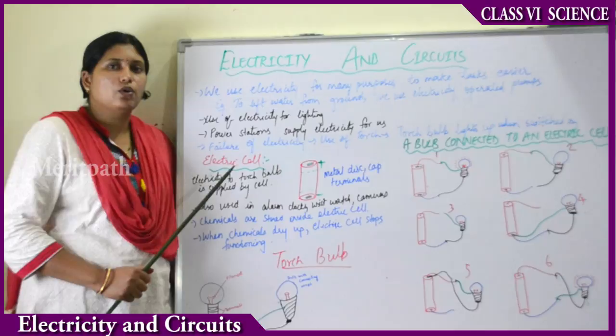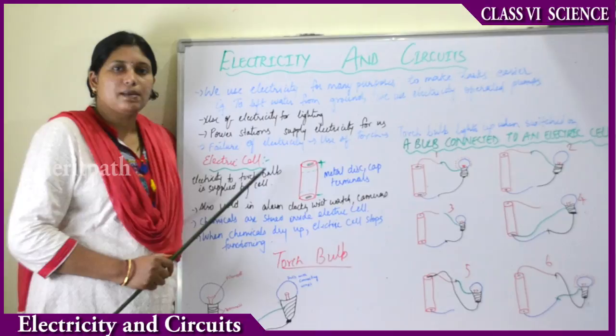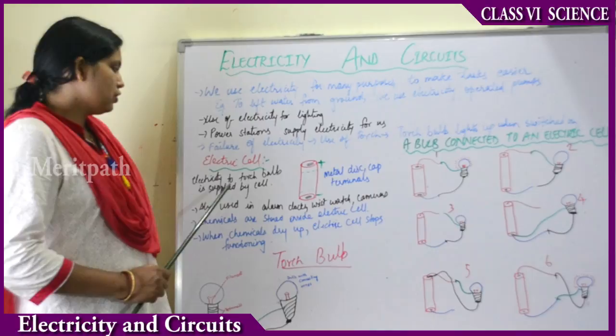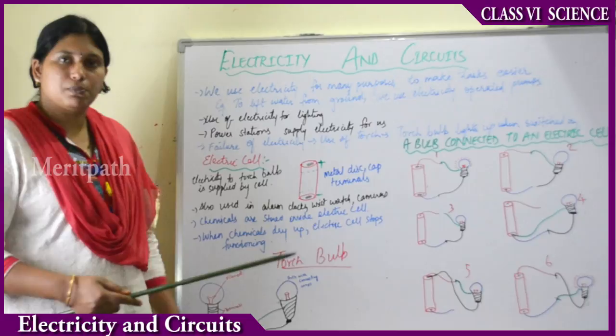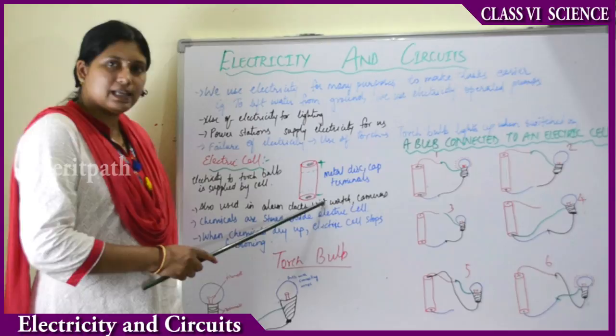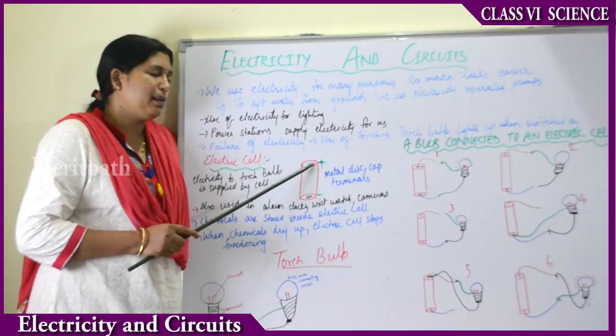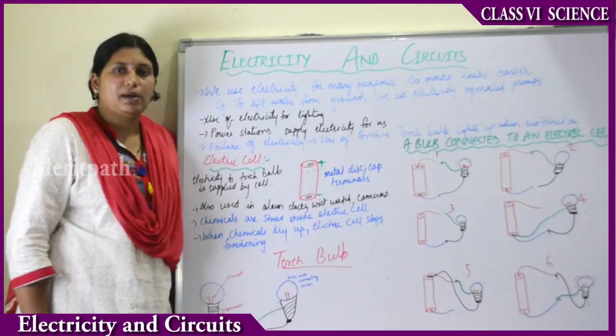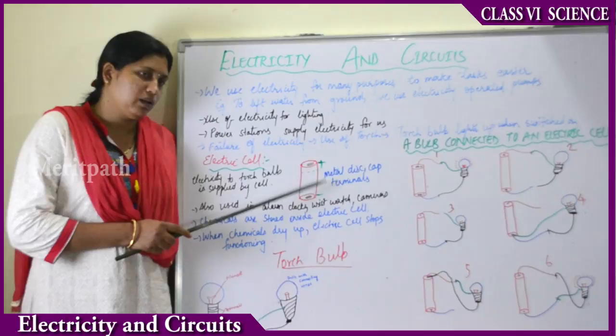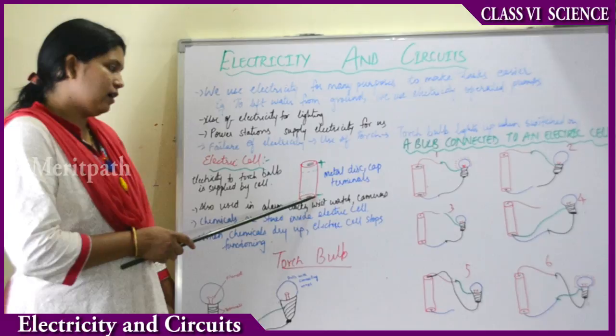The major source of electricity in a torch is the electric cell. The electric cell supplies the energy needed for lighting the bulb. What are the parts of a cell? The cell always has two terminals — positive and negative — indicated by plus and minus signs. It has a metal disc and a metal cap; the outer structure is made up of metal.